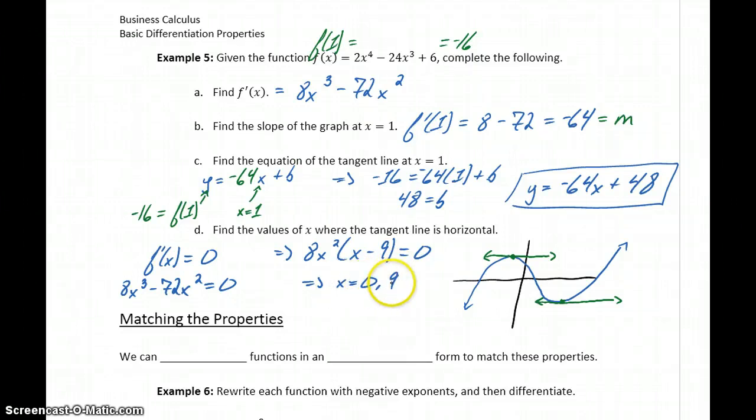So at x equals 0 and x equals 9, our function has this point where, just for an instant, that tangent line becomes horizontal. So the rate of change becomes 0 just for that moment.